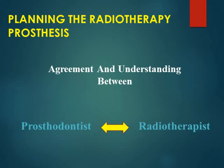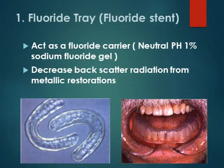Whenever planning a radiotherapy prosthesis, there should be agreement and understanding between the prosthodontist and the radiotherapist. The first example is a fluoride tray, fluoride carrier, or fluoride stent. Patients receiving radiation therapy and chemotherapy will be more liable to xerostomia, which makes them more liable to caries. The patient should apply fluoride on a daily basis — neutral pH 1% sodium fluoride gel is placed on silicone carriers for 5 to 10 minutes every day. This carrier also decreases backscatter radiation from metallic restorations such as amalgam or metal crowns.